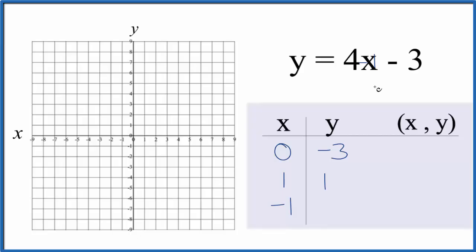And why don't we do -1? 4 times -1 gives us -4. -4 and -3 is -7. So these are the points we'll graph for the linear equation y = 4x - 3.